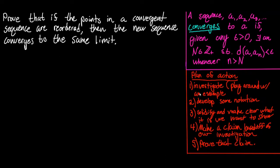Our plan of action for this proof has five parts. First, we'll investigate an example and develop conclusions about the patterns we see. Second, we'll develop notation to more clearly communicate those conclusions. Third, we'll solidify what it is we want to show. Fourth, we'll make a claim based off our investigations. And fifth, we'll prove that claim.